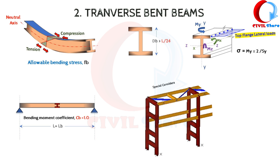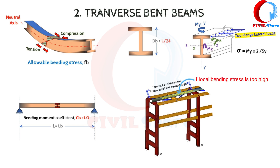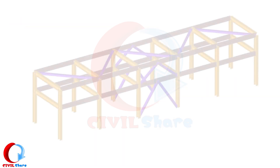Special consideration shall be given to the design of transverse beams which support large vapor lines to be hydrotested or which support large anchor or guide forces. Horizontal bracing may be required locally if the local bending stresses are too high.